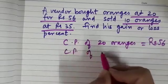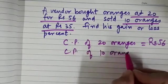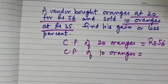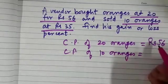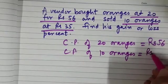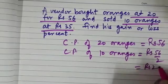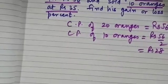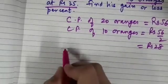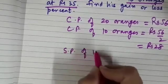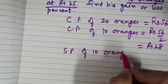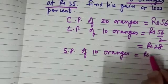Can you find the CP of 10 oranges? Yes, it will be half of this, that is rupees 56 by 2, so rupees 28. Now SP of 10 oranges is given to be rupees 35.